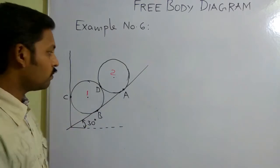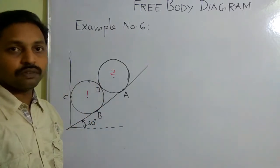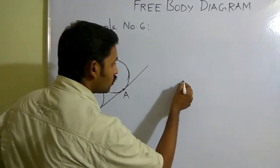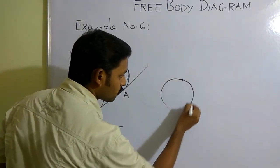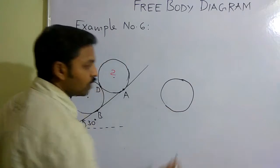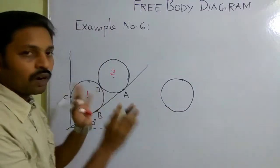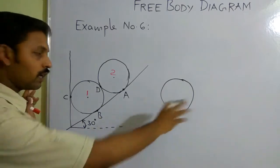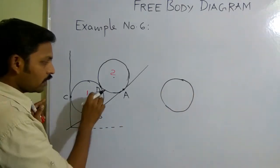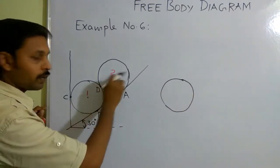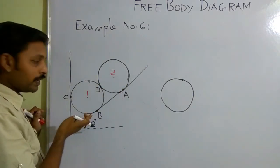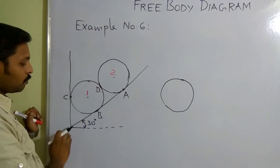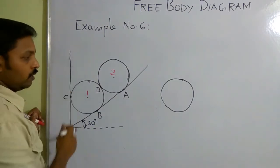Let me start with the first roller. When I want to draw the free body diagram for the first roller, I should draw that roller separately, removing all the contact surfaces. Here D is the contact point between roller 1 and roller 2, B is the contact point with the inclined surface, and C is the contact point with the vertical wall.